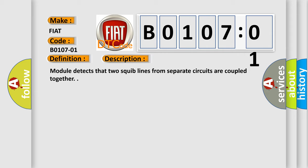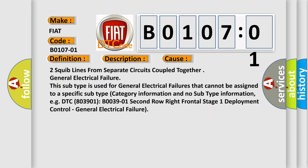General electrical failure. This diagnostic error occurs most often in these cases: two squib lines from separate circuits coupled together. This subtype is used for general electrical failures that cannot be assigned to a specific subtype.